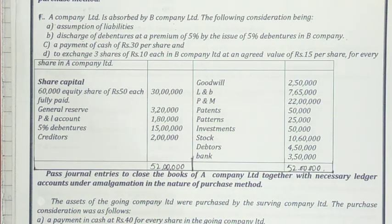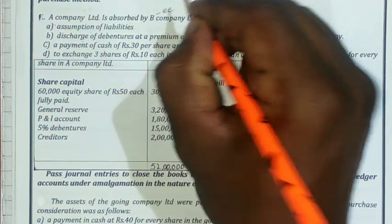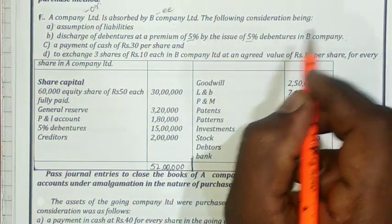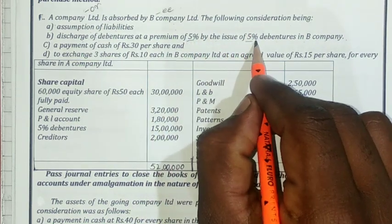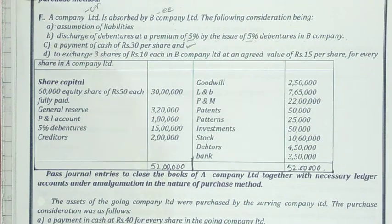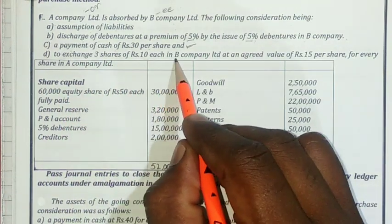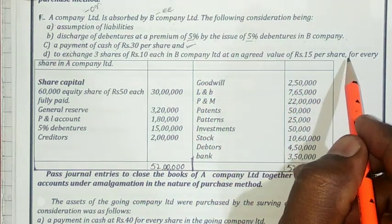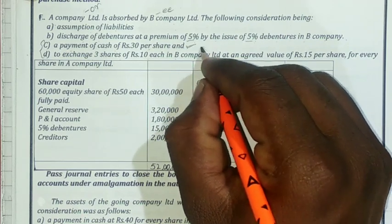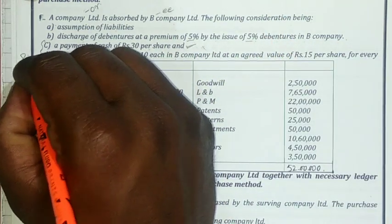This is the problem. A company limited is absorbed by B company limited. So B is the purchasing or acquiring company — it is the transferee company. A is the selling company, hence it is the transferor company. The consideration includes: assumption of liabilities, discharge of debentures at a premium of 5% by the issue of 5% debentures in B company, payment of cash of rupees 30 per share, and exchange of three shares of rupees 10 each in B limited at an agreed value of rupees 15 per share for every share in A limited. Points C and D relate to payments to shareholders.